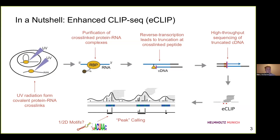One starts with irradiating cells with UV light, which forms covalent cross-links between proteins and the bound RNAs. Subsequently, you can use a protein-specific antibody to pull down the protein of interest. The protein-RNA complex gets purified and the protein gets partially digested. This is followed by reverse transcription, which often leads to premature truncation at the site of the protein-RNA cross-linking, because there's a small peptide remaining at this site which acts as a physical barrier.